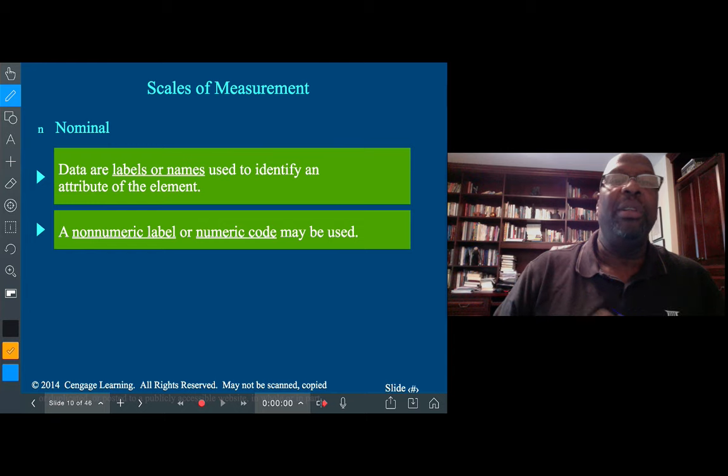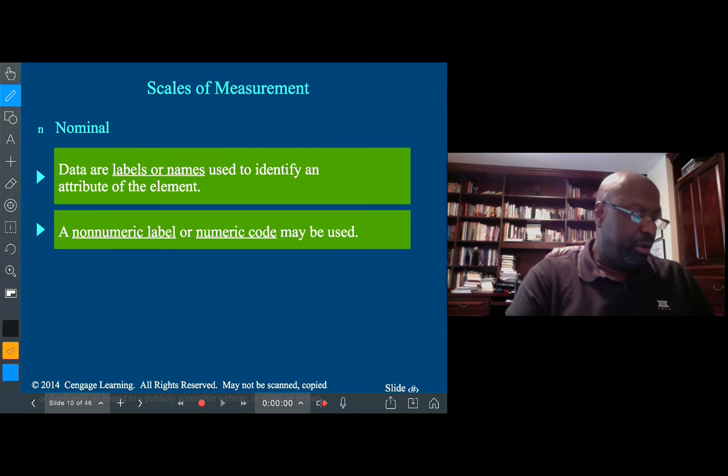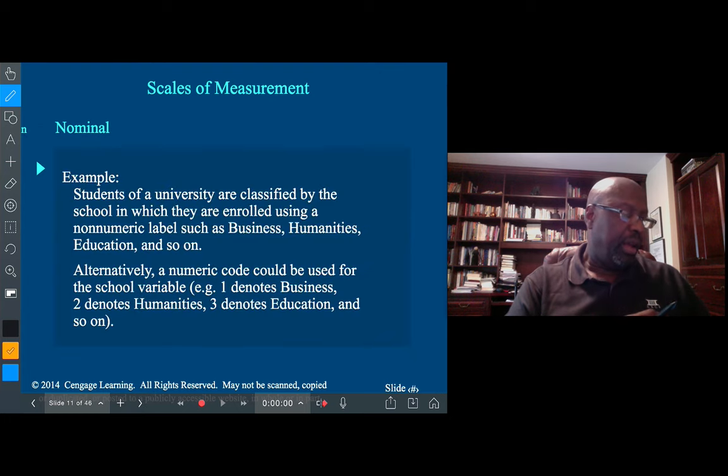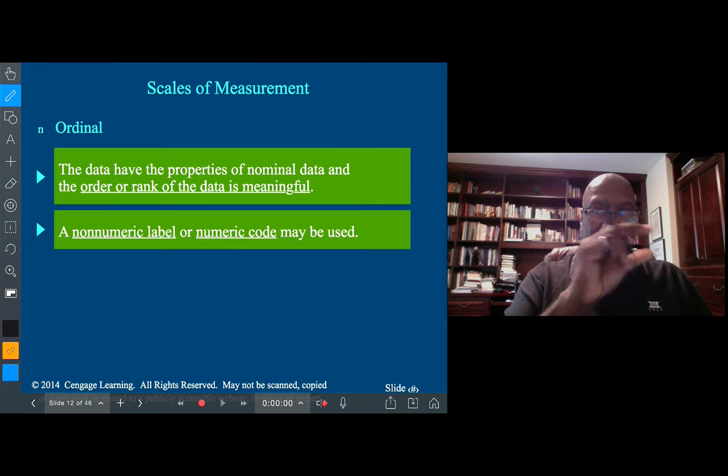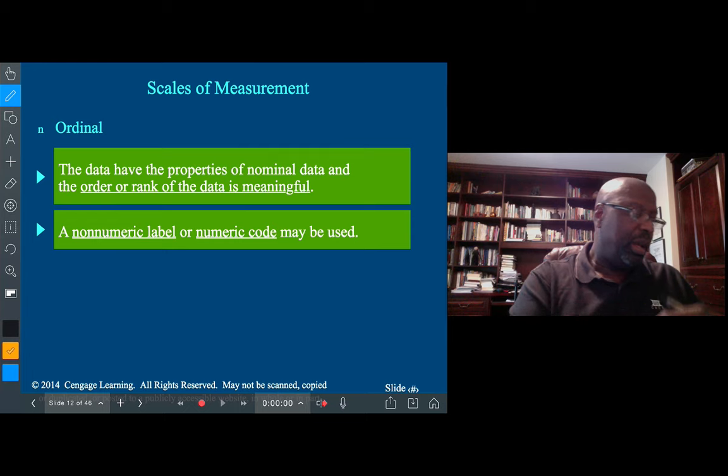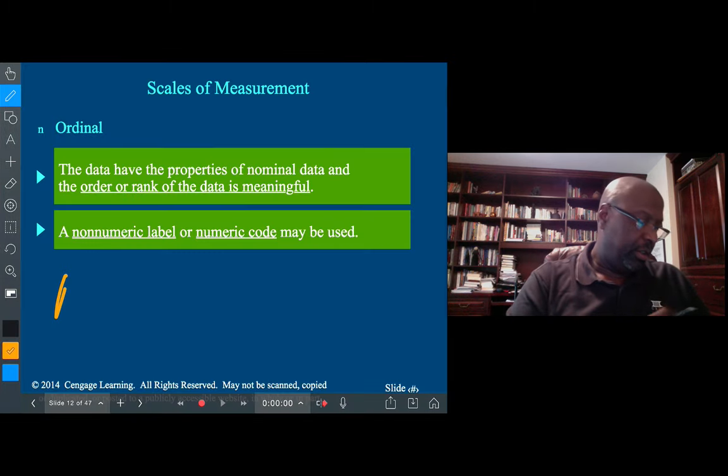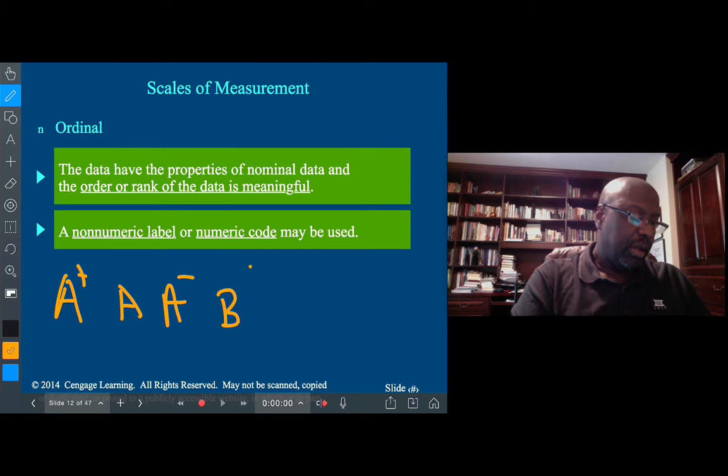Nominal data essentially has labels attached to them, but the labels do not necessarily have a hierarchy. If I'm looking at shirts in a room, we could have red shirts, blue shirts, green shirts - these are all different types of colors and none is better than the other. That's nominal data.